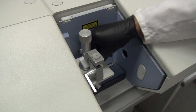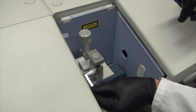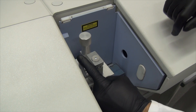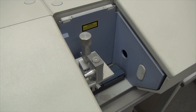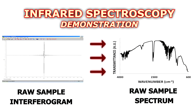In the next step, we place our sample on the ATR crystal to measure its interferogram and convert it into a spectrum. As you can see, additional absorption peaks have appeared, and these represent our sample.